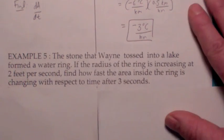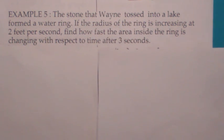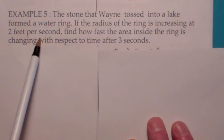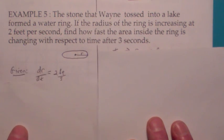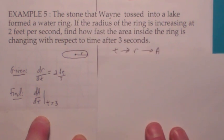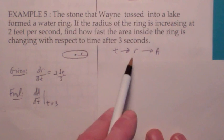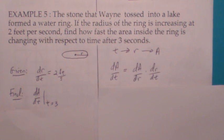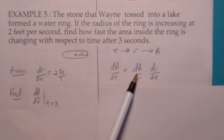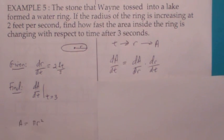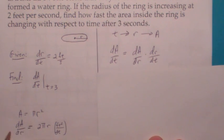Suppose Wayne throws a stone into a lake and it forms a water ring. If the radius of the ring is increasing at a rate of 2 feet per second — that's dr/dt, where r is the radius — find how fast the area inside the ring is changing after 3 seconds. So you're given dr/dt equals 2 feet per second and they want you to find dA/dt when t equals 3. It makes sense that r is a function of time and area is a function of the radius. So the chain rule gives dA/dt equals dA/dr times dr/dt. The rate of change of area with respect to radius for a circle — you remember that area equals pi r squared, so dA/dr is 2 pi r. The units would be square feet per foot, so feet.